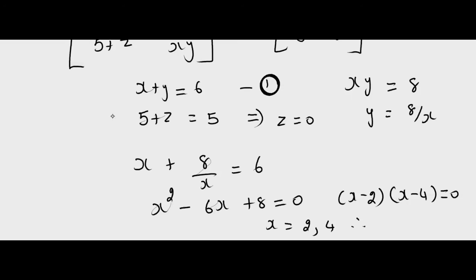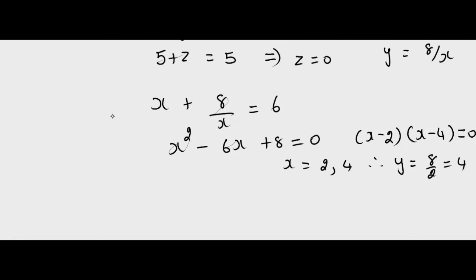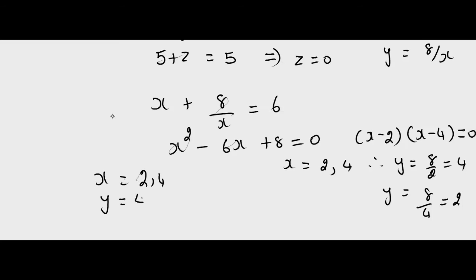Therefore, when X equals 2, Y equals 8 by 2 which is 4; and when X equals 4, Y equals 8 by 4 which is 2. So X equals 2 or 4, Y equals 4 or 2, and Z equals 0.